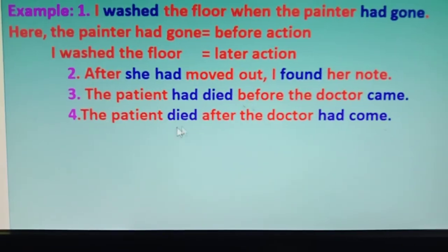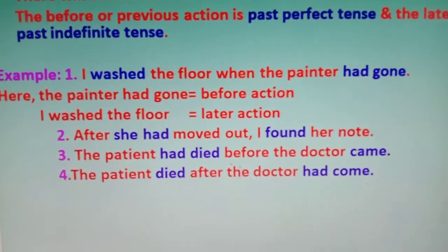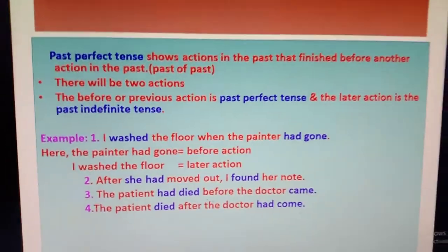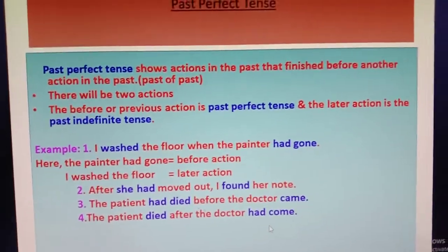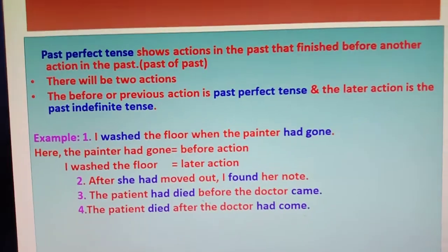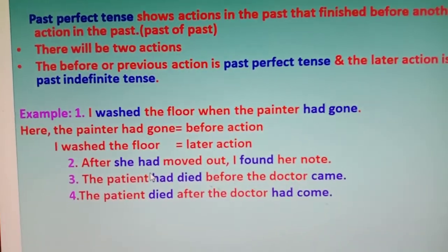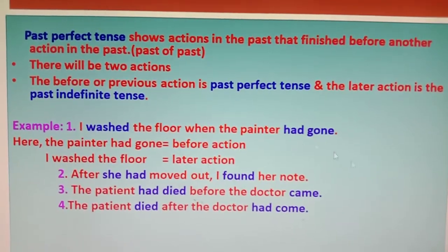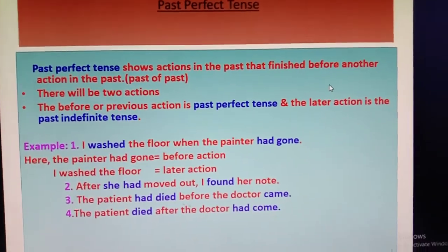So boys, when you are talking about two actions in one sentence in past tense, you have to use Past Perfect Tense. There will be two actions, one action will be related to another, and there will be a sequence — after one action, another action follows. When two actions happen in the past, you have to use Past Perfect Tense.